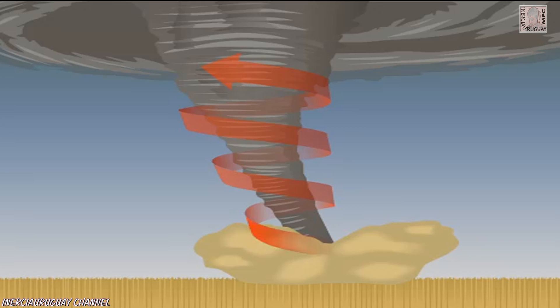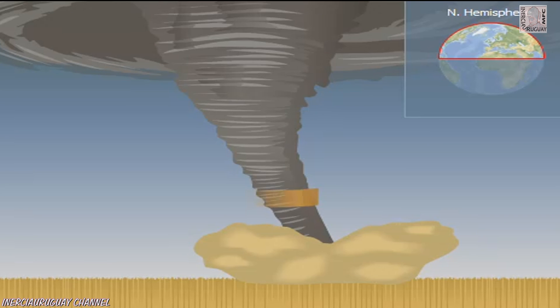Tornadoes are made visible by dust they suck up, as well as condensed water droplets in the center of the cloud. They rotate primarily counter-clockwise in the northern hemisphere and clockwise in the southern hemisphere.